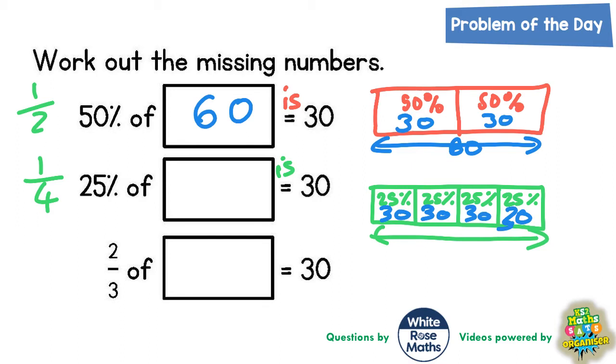So therefore the whole thing, the whole mystery number, must be four lots of 30. And some of you should be able to do that in your head. Four lots of 30 is 120. Obviously if you couldn't do it, you could just do a quick column method at the side. Four zeros are zero, four threes are 12.